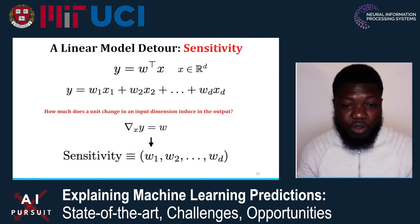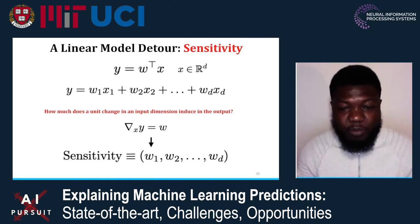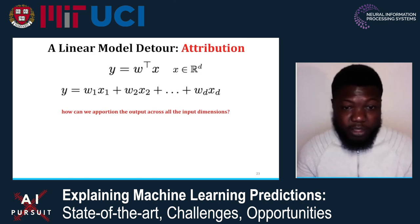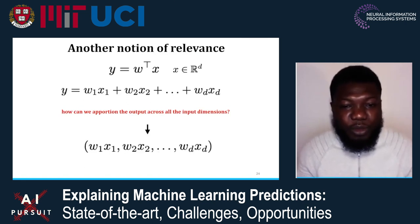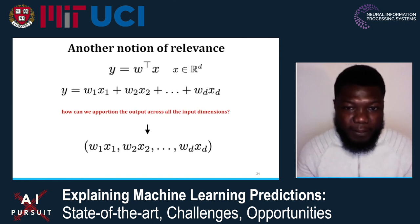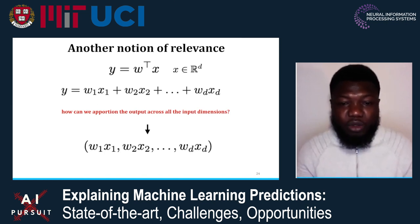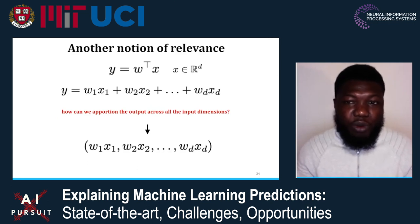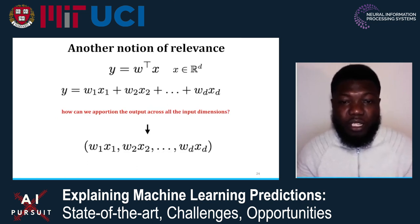The gradient here is the input gradient — you compute the derivative of the output with respect to the input, and you essentially get the weight vector. Another form of relevance you can compute is to ask: how can I take the output Y and apportion it across the dimensions of my input? One answer is to compute the element-wise product of the weights times the actual feature dimensions. These two notions of relevance — the sensitivity in the form of the input gradient, and the gradient times input — will translate into the deep neural network setting.